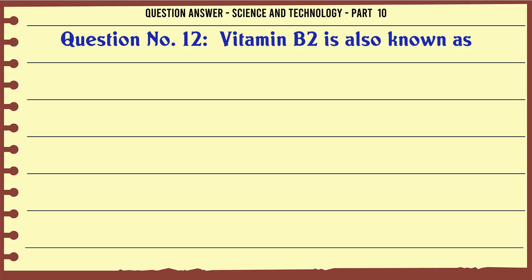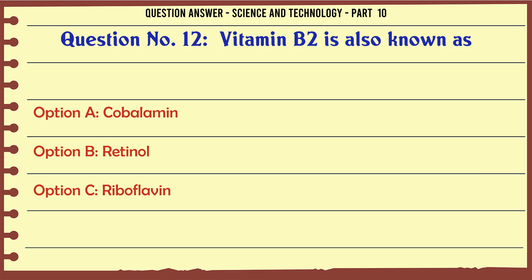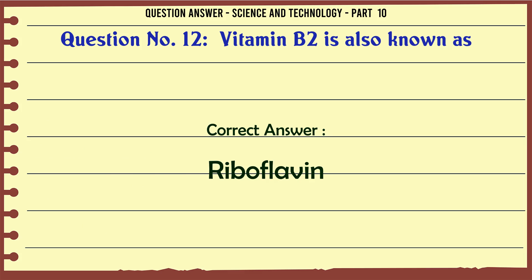Vitamin B2 is also known as. A. Cobalamin. B. Retinol. C. Riboflavin. D. Tocopherol. The correct answer is Riboflavin.